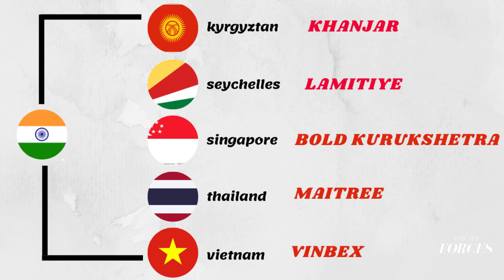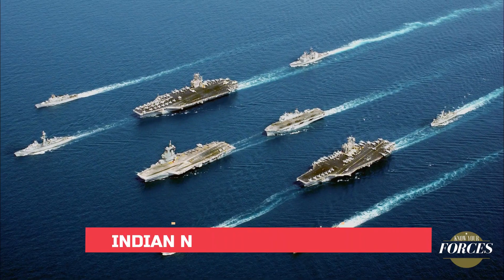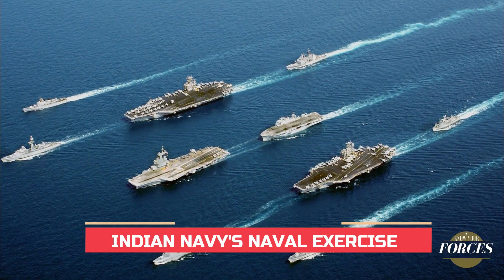Nomadic Elephant is between India and Mongolia. Khanjar is between India and Kyrgyzstan. Lamitye is between India and Seychelles — Seychelles is an island in the Indian Ocean and it has become important for India to counter China's interference in the Indian Ocean. Bold Kurukshetra is between Singapore and India. Maitree is between India and Thailand. Vinbax is between India and Vietnam.